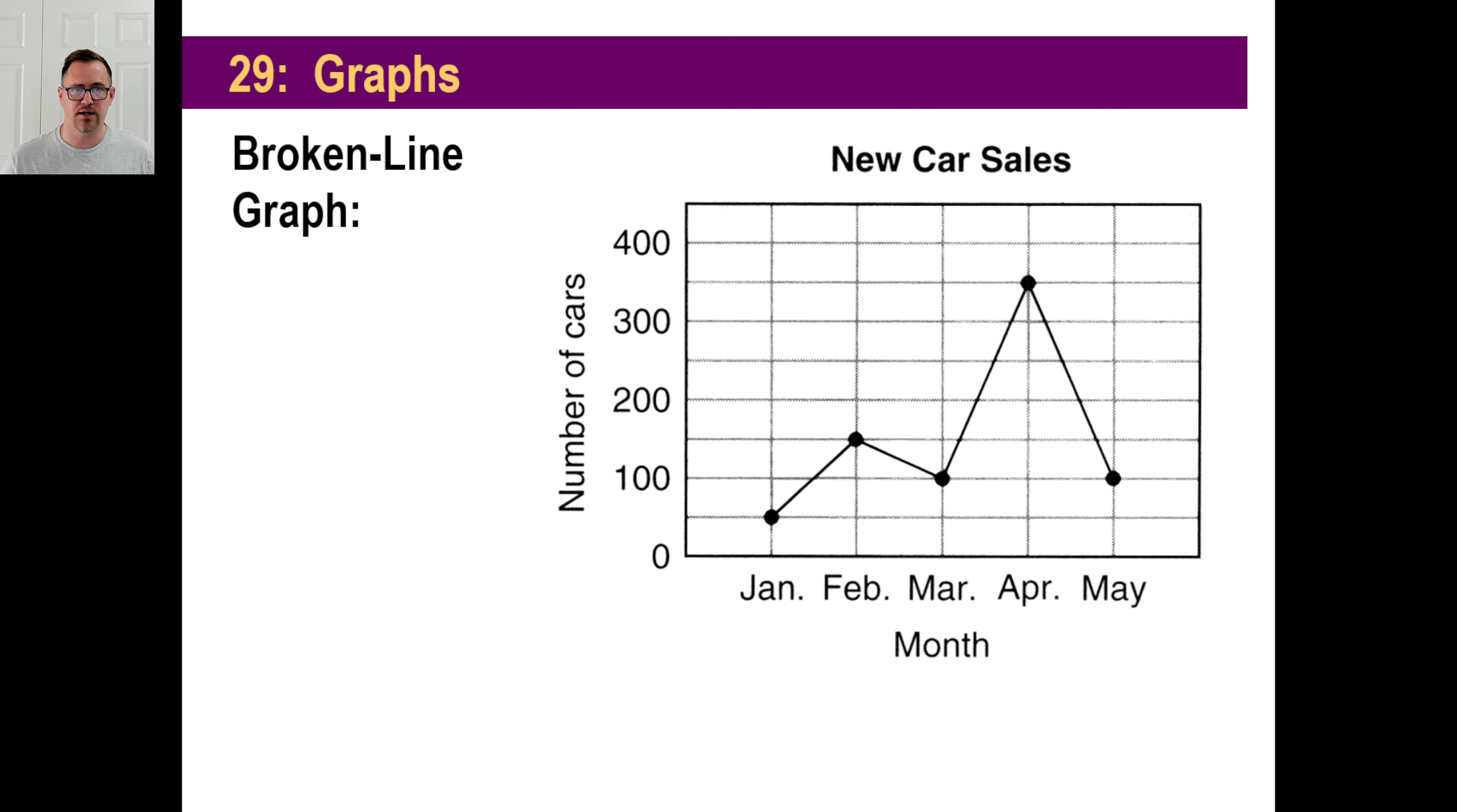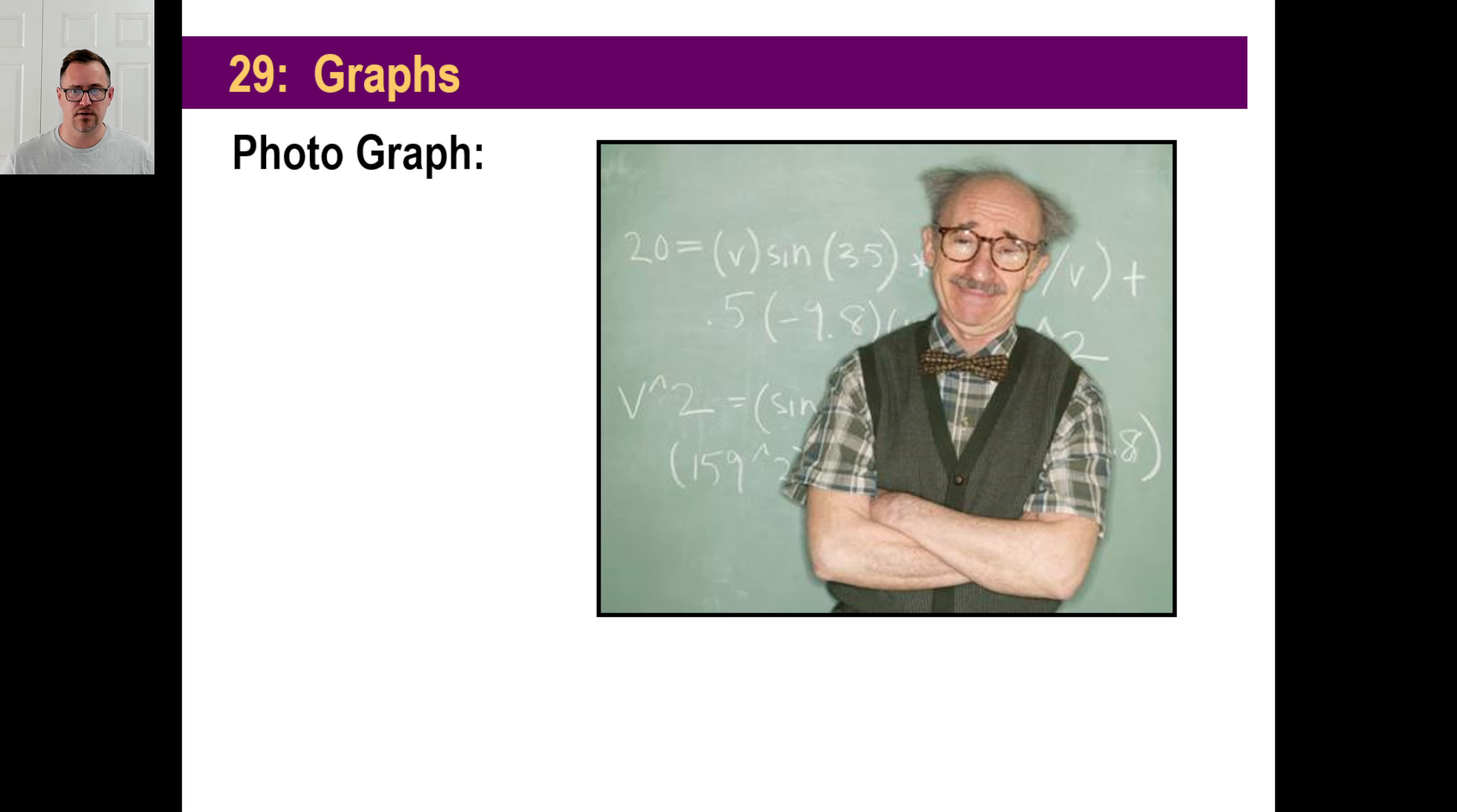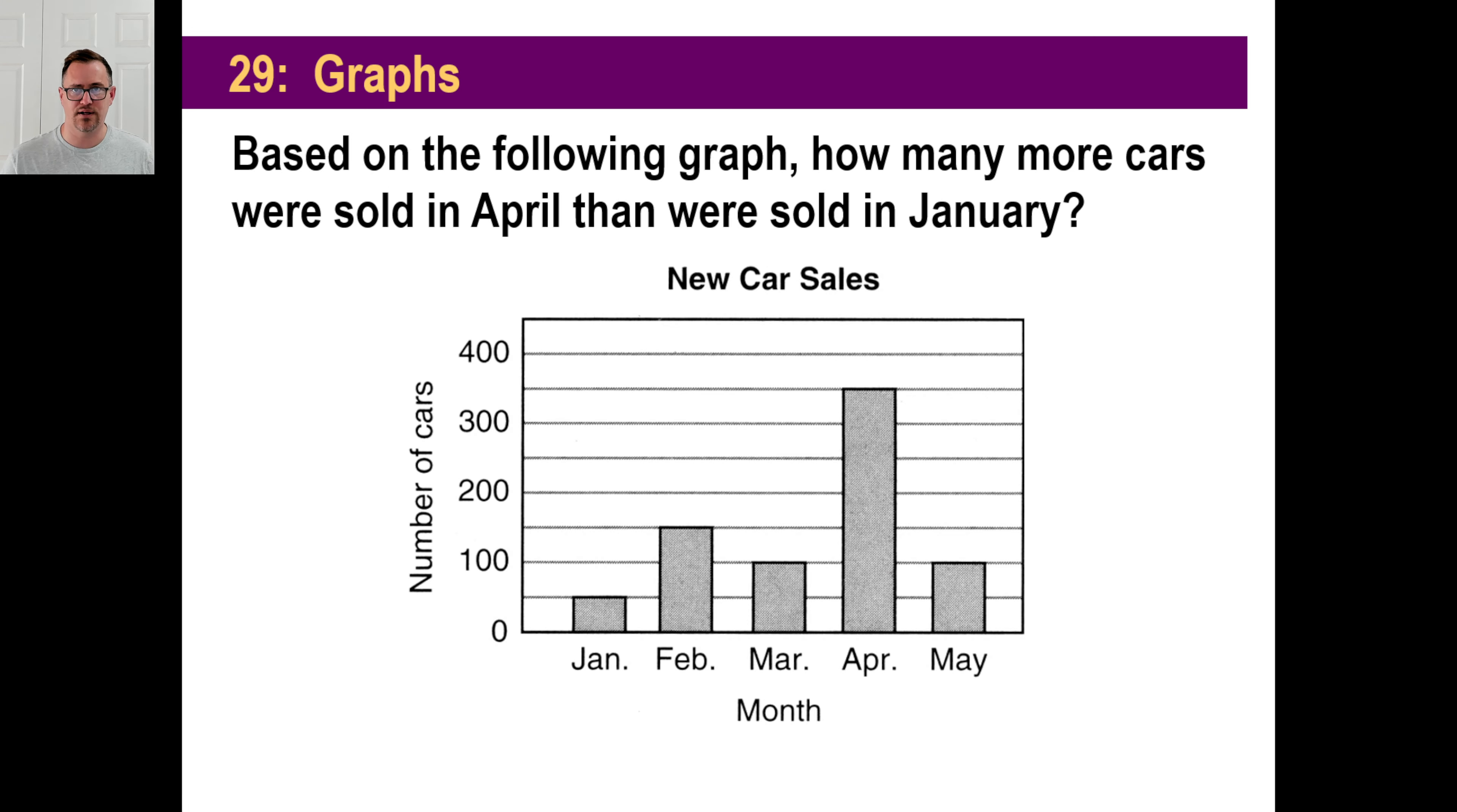So we have bar graph, broken line graph, and the third type of graph is a photograph. Oh man, that's a weird picture. Don't look at that. Forget all that.